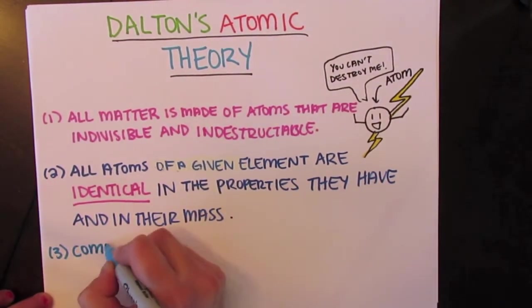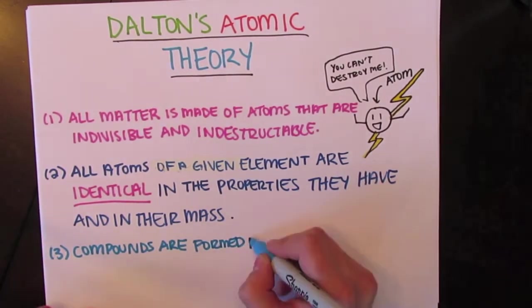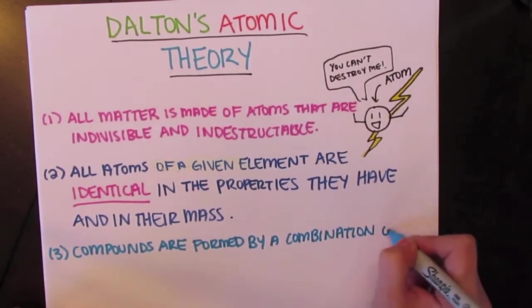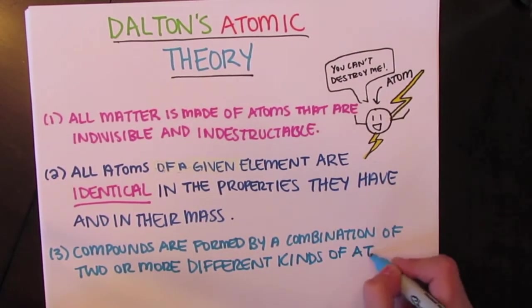The third is that compounds are formed by a combination of two or more different kinds of atoms. This, for example, would be carbon and oxygen coming together to form a compound of carbon dioxide.